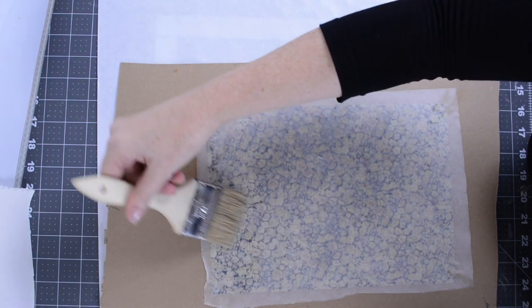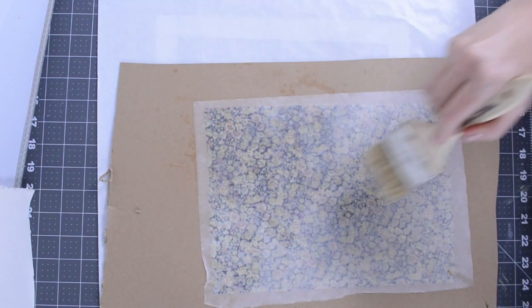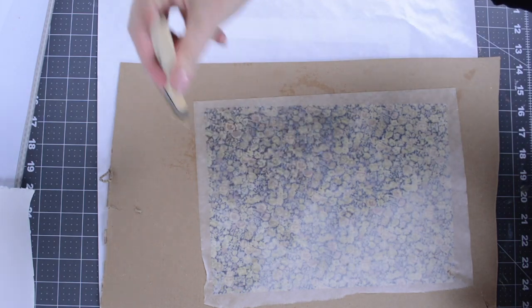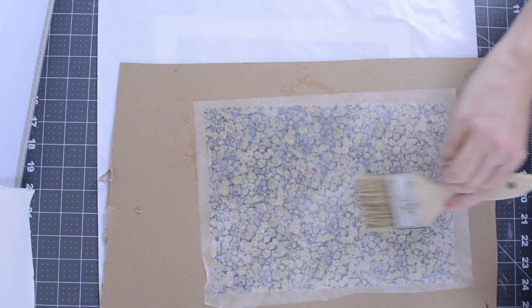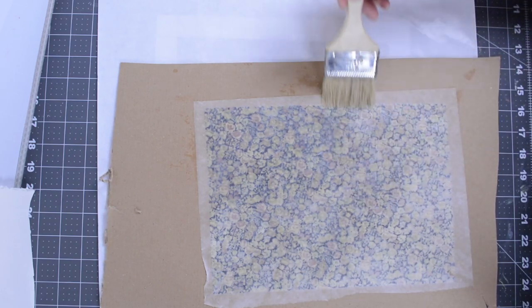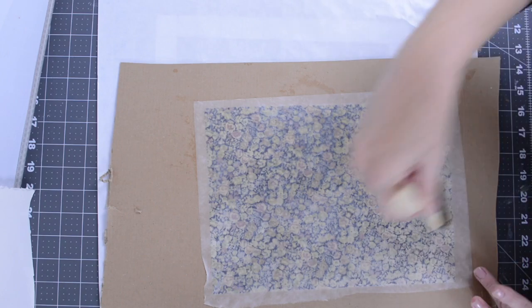Then taking another brush—this is a clean brush—you just smooth out any air bubbles or any creases going from the center outwards, and really adhering that paper to the fabric.